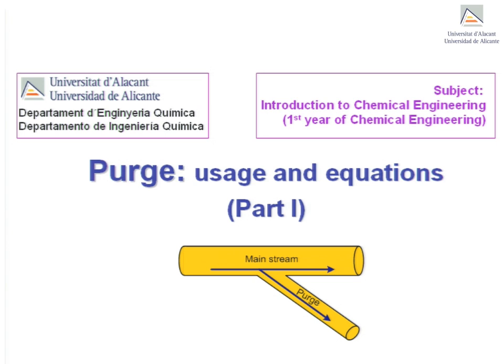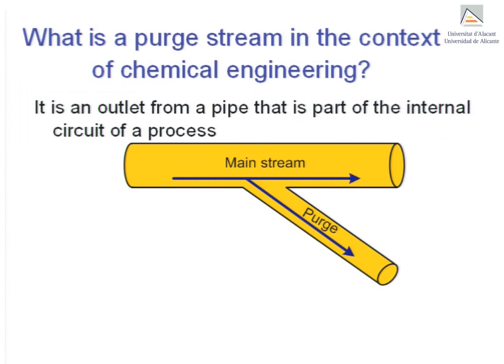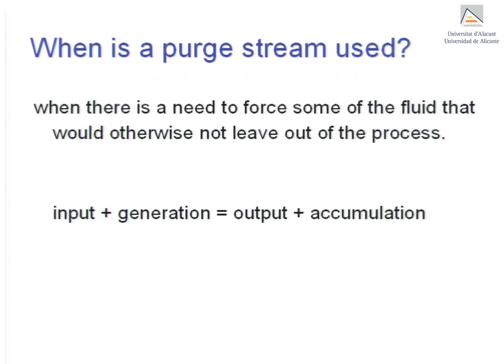A purge is an outlet from a pipe that forms part of the internal circuit of a process. Its purpose is to force some of the fluid flowing in the pipe out of the process. It is used when it becomes necessary to force a substance that would otherwise not leave out of the system.